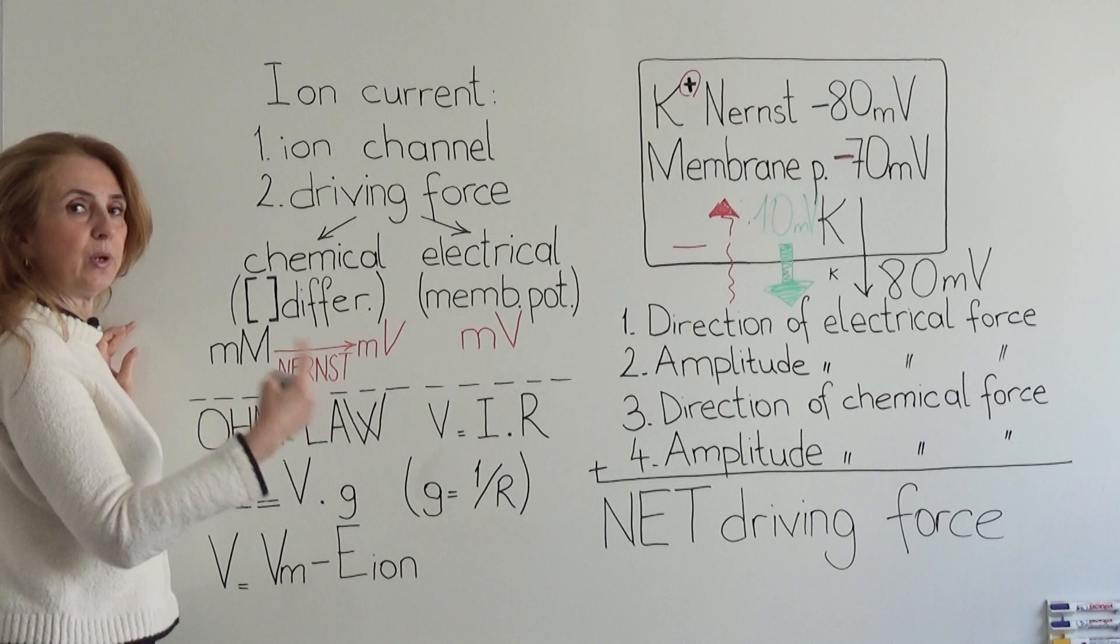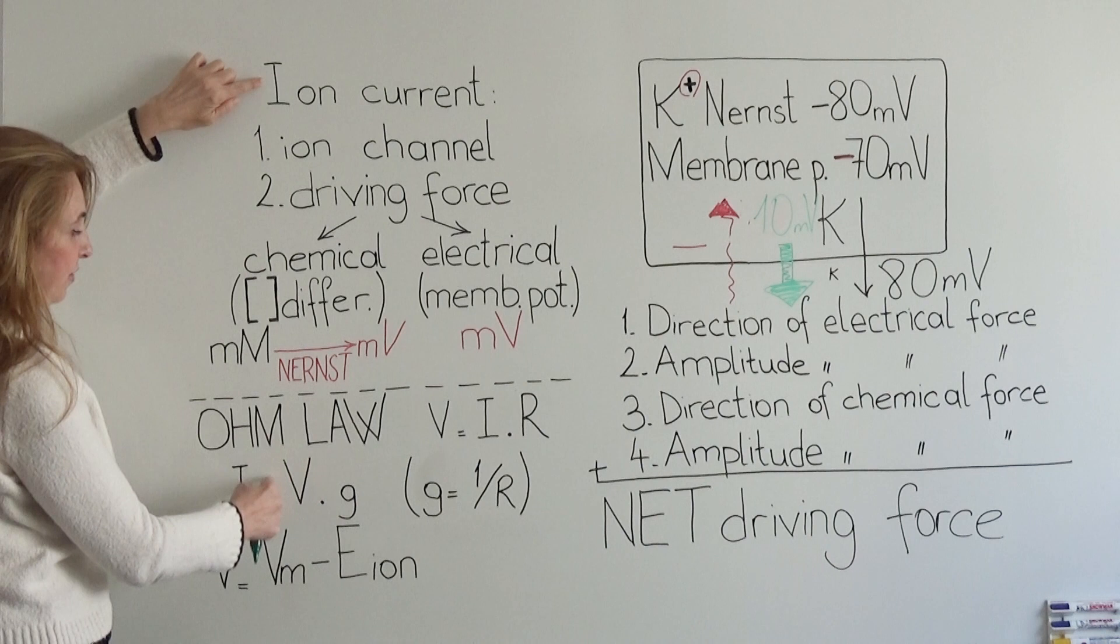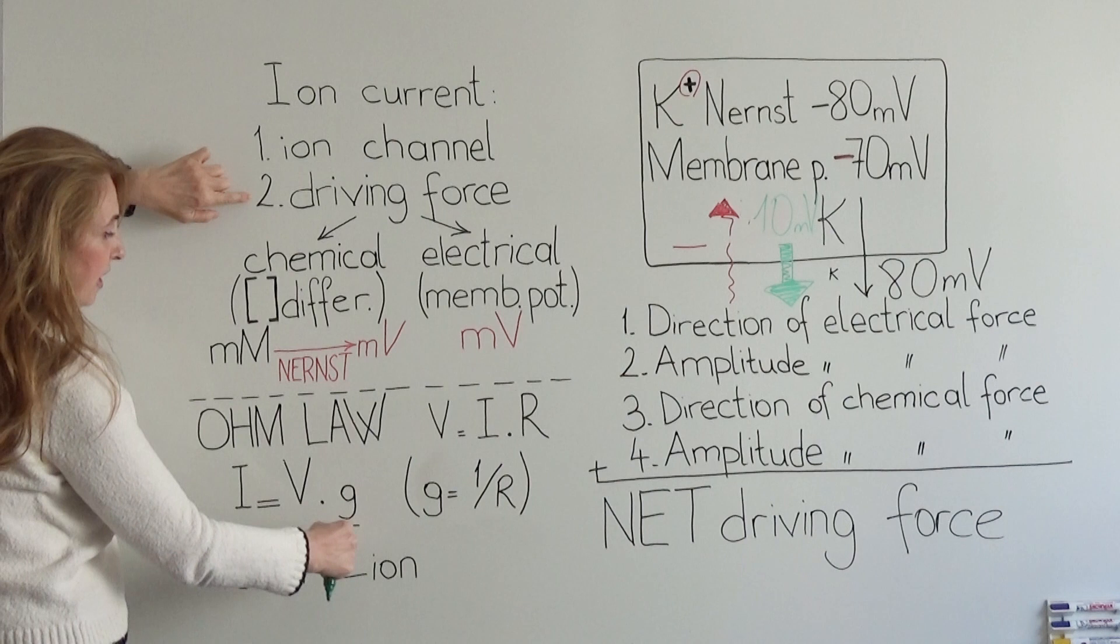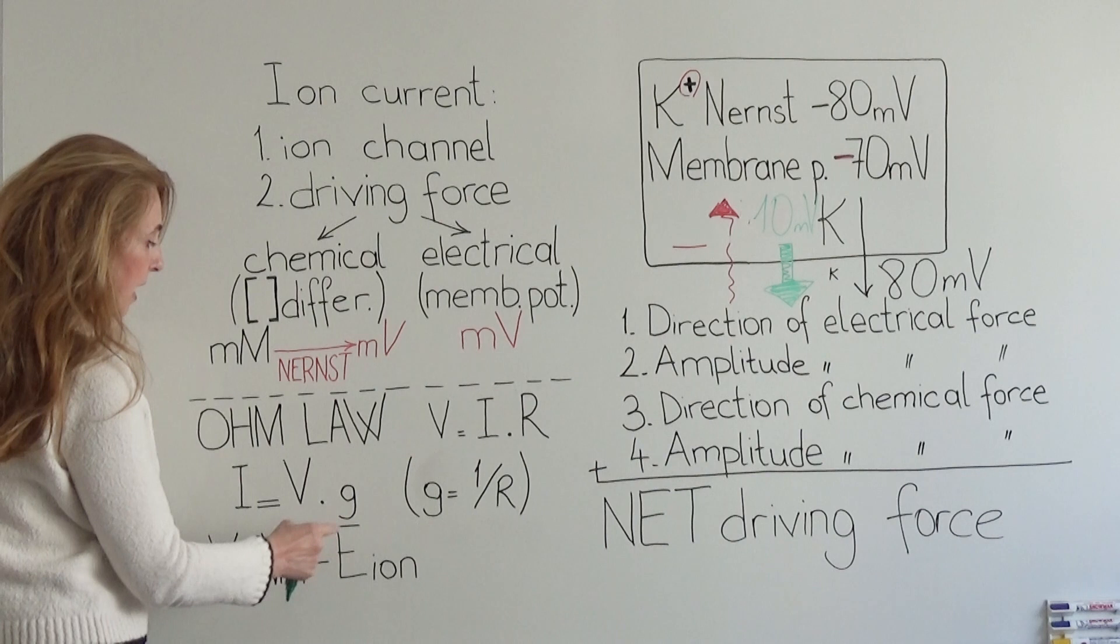The same thing can be applied to our ion channels. We can say that an ion current can be produced by an electrochemical driving force through the channels that have a permeability or conductance to the ions. So the conductance here is the reciprocal of resistance.